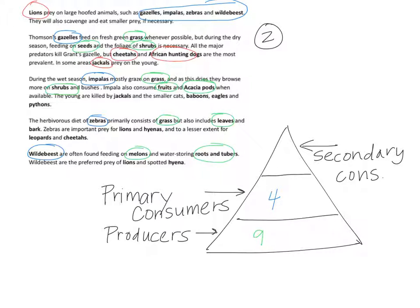Some other secondary consumers: jackals, baboons, and eagles, because they eat the impalas. Lions, hyenas, cheetahs, and leopards eat the zebras. And hyena and lion eat the wildebeest, so again they are secondary consumers. When you add all those up together, you get nine different secondary consumers in this energy pyramid.